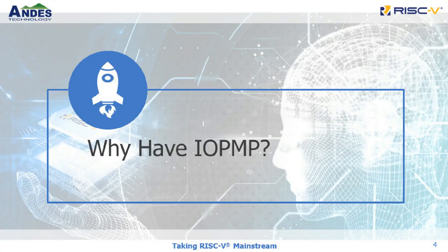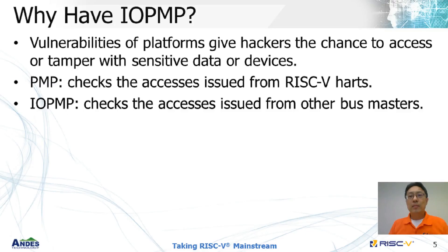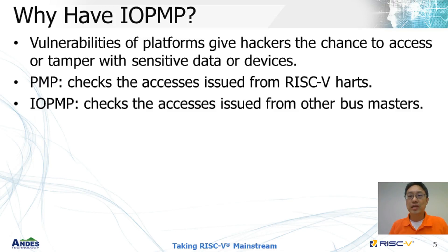So why do we need IOPMP? Platform vulnerability gives hackers a chance to access sensitive data or devices. Therefore, people try to define access rules to control every transaction on the platform in a hierarchical manner. For RISC-V cores, we have PMP to define the rules to check transactions issued from them. For the rest of the bus masters such as DMA, IOPMP is in charge of checking those transactions.